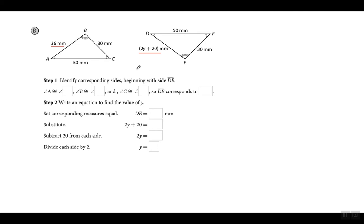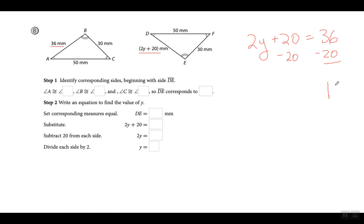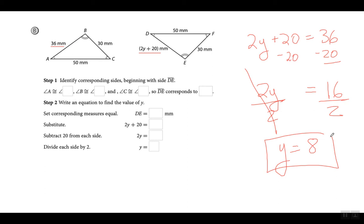Like I was saying, this side goes with this side right here. So I'm going to set up an equation — for these triangles to be congruent, this side has to equal that side: 2y + 20 = 36. To solve for y, first I move the 20 — subtract 20 from both sides — giving me 16 = 2y, so y equals 8.